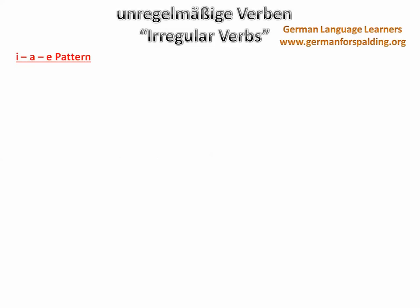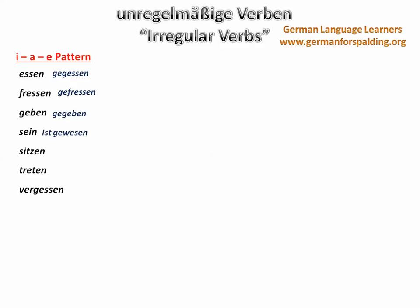Now let's look at the past participles — how they are formed using the perfect tense. Group 1: essen → gegessen; fressen → gefressen; geben → gegeben; sein → gewesen (remember, sein uses sein as its helping verb, so er ist gewesen, not er hat gewesen); sitzen → gesessen; treten → getreten (er ist in Zimmer getreten — he has stepped into the room, so it uses sein); vergessen → vergessen.